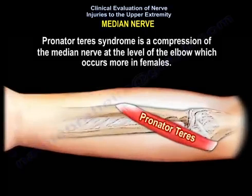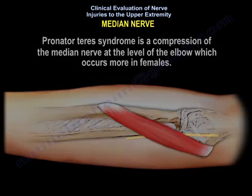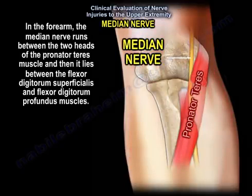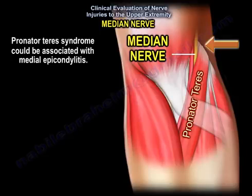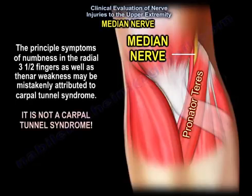Pronator teres syndrome is a compression of the median nerve at the level of the elbow, which occurs more in females. In the forearm, the median nerve runs between the two heads of the pronator teres muscle, and then lies between the flexor digitorum superficialis and the flexor digitorum profundus muscles. Pronator teres syndrome could be associated with medial epicondylitis. The principal symptoms of numbness in the radial three-and-a-half fingers as well as thenar weakness may be mistakenly attributed to carpal tunnel syndrome, but it is not carpal tunnel syndrome.